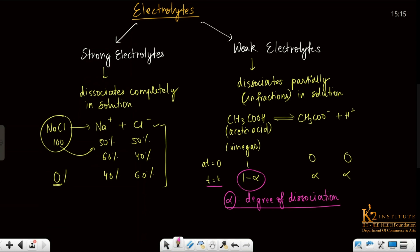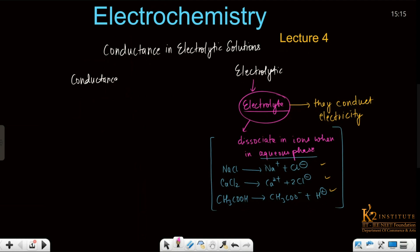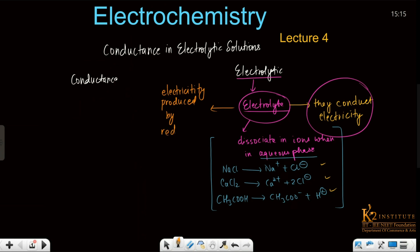Now the point is: how are these electrolytes linked with electrochemistry? Electrolytes are substances that conduct electricity. Electrochemistry is basically the branch of chemistry that helps us define how electricity is produced. Electrochemistry tells us that electricity is produced through a spontaneous process. That is our electrochemistry story.